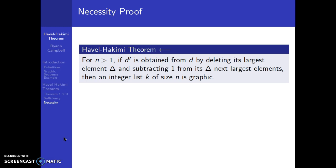Now let's take a look at the necessity proof. The Havel-Hakimi theorem backwards says that if d' is obtained from d by deleting its largest element Δ and subtracting 1 from its Δ next largest elements, then an integer list d of size n is graphic. So we're going to be starting by producing G' realizing d', and we are also starting with a simple graph G realizing d.